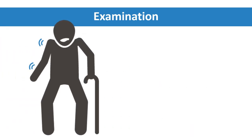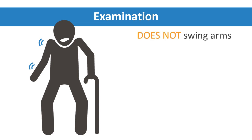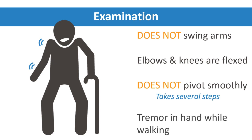You ask the patient to stand up, walk down the hallway, turn around, and return to the examination room. You notice a stooped posture, a normal base, slow pace, and shortened stride length. He does not swing his arms and keeps his elbows and knees flexed. When turning around, he does not pivot smoothly but instead takes several steps — also called an en-bloc turn. You also observe a slight tremor in his right hand when he walks.